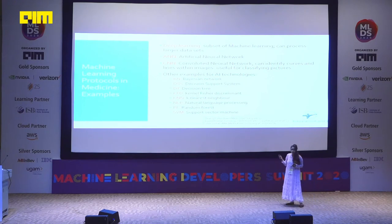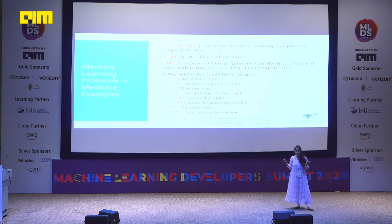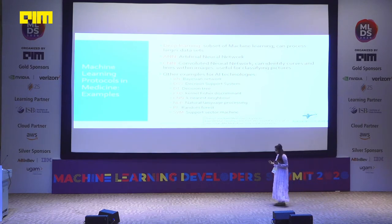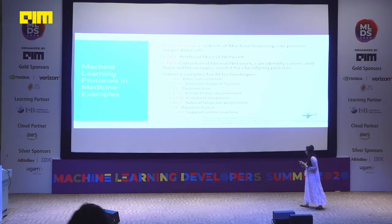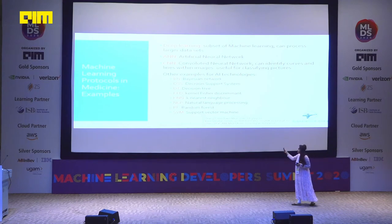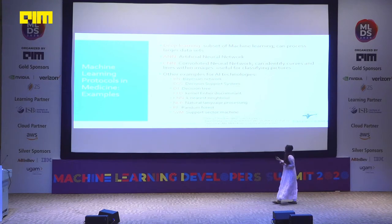These are terminologies we've been using since morning. Deep learning is a subset of machine learning, basically used to analyze large data sets. Artificial neural networks and convolutional neural networks are part of deep learning. Just as neurons exist in our brains, nodes exist in artificial neural networks. We use artificial neural networks to identify hidden complex patterns, and convolutional neural networks to classify images — it reads images in pixel format, including lines and curves.